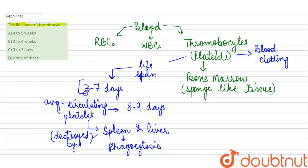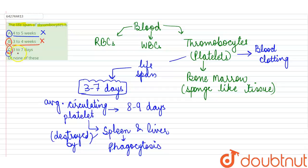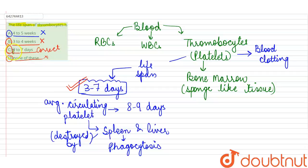The average lifespan of a thrombocyte is around 3 to 7 days. Looking at the options: option A (4 to 5 weeks) is incorrect; option B (3 to 4 weeks) is also incorrect; option C (3 to 7 days) is the correct answer. Option D (none of these) is also incorrect, since the correct lifespan of thrombocytes is 3 to 7 days.